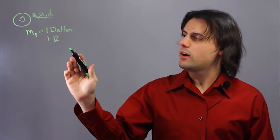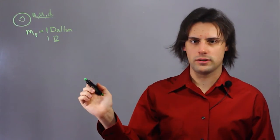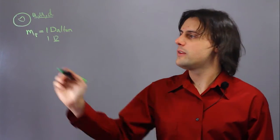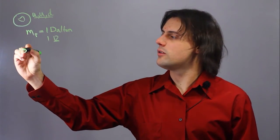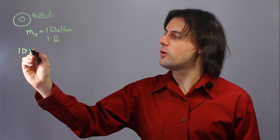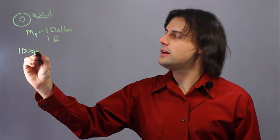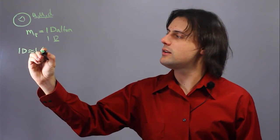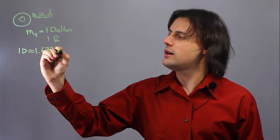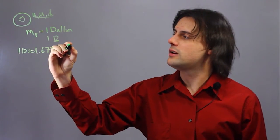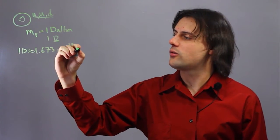This can be written in terms of other units of mass such as kilograms. One dalton, or the mass of one proton, is approximately equal to 1.673 times 10 to the negative 27 kilograms.